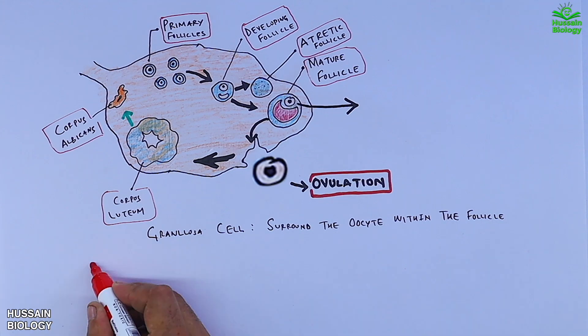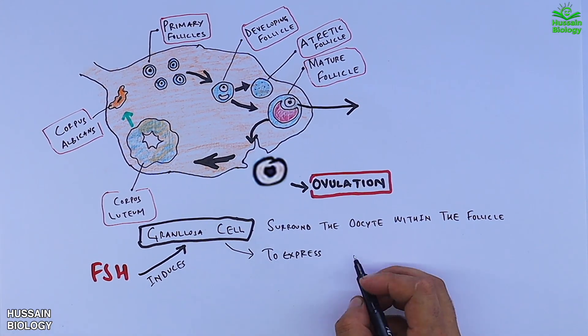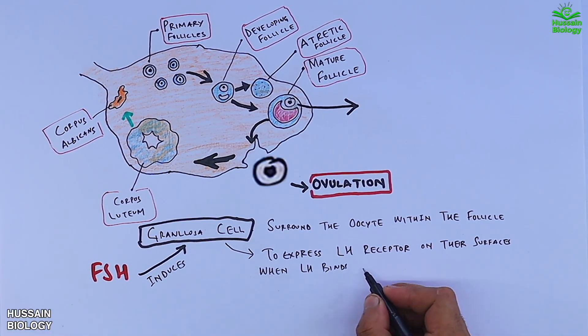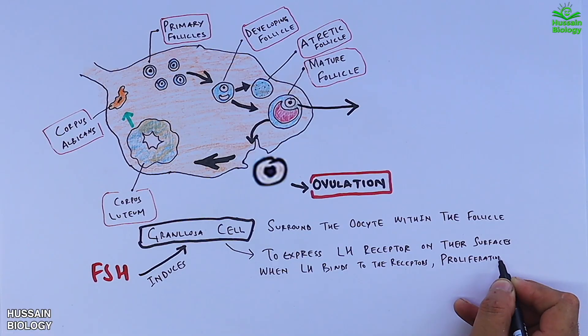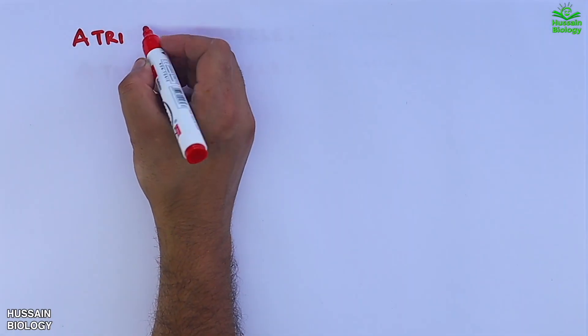FSH, that's follicle stimulating hormone, induces the granulosa cells to express LH receptors on their surface. And when LH binds with these receptors, the proliferation stops. Second important structure in this process is atretic follicle.